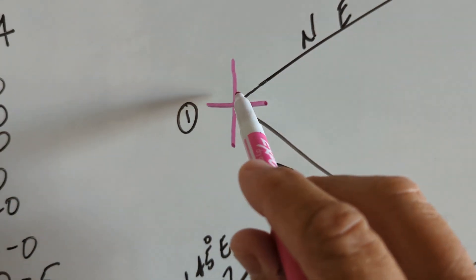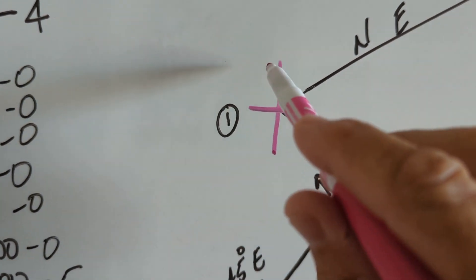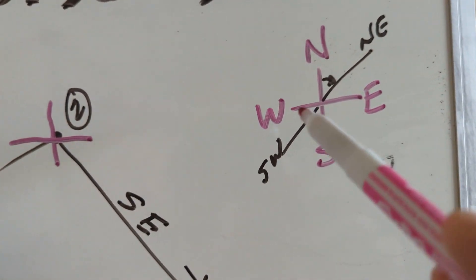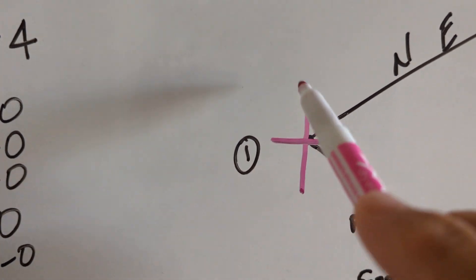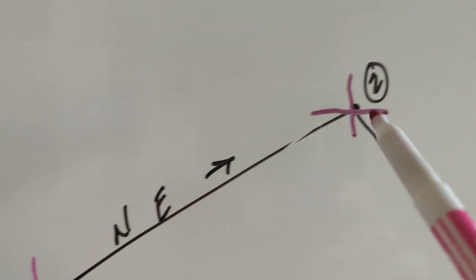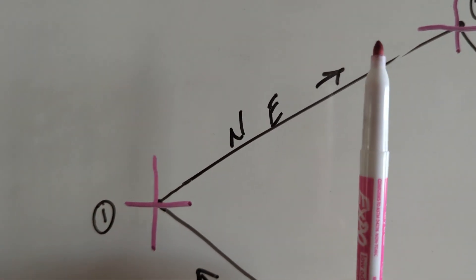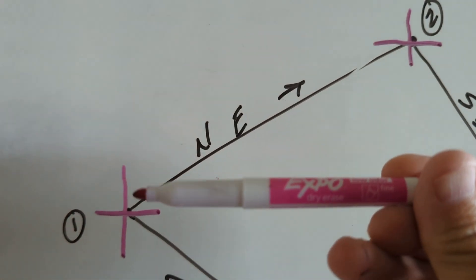And so what I had him do is like for every point, like maybe on a piece of grid paper, kind of do a north, south, east, west. So that point, here's our north, south, east, and west. Point two, north, south, east, west, because north is not going to change. East and west is not going to change.